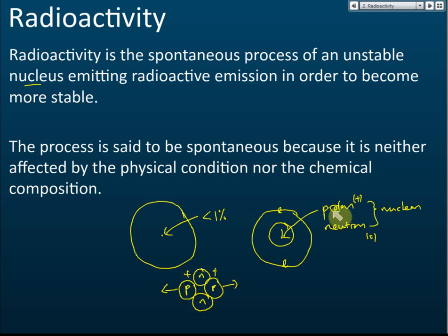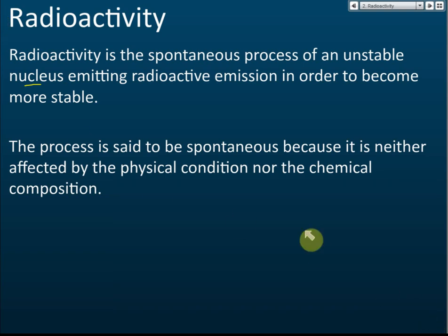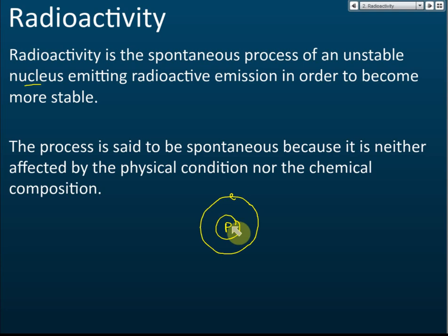Out of all atoms, hydrogen is the only one with no neutrons — it has just one proton in the nucleus and one electron in the shell. Hydrogen doesn't need neutrons because with only one proton, there is no repelling force between protons, so no neutrons are needed to hold them together.